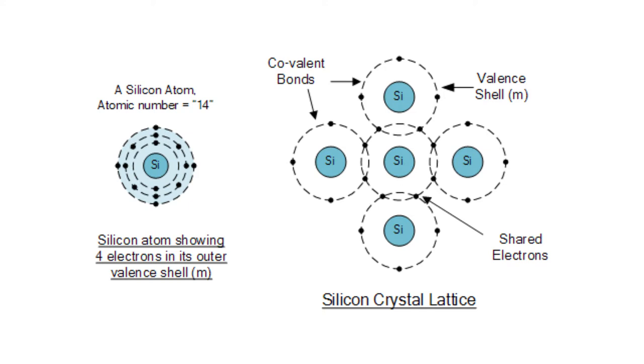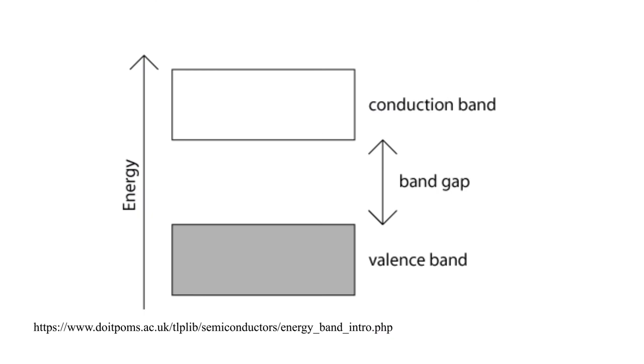When these valence electrons bind with neighboring atoms, the bonds are known as covalent bonds. When heated, the electrons have enough energy to jump from the valence band to the conduction band so a small current can be conducted.